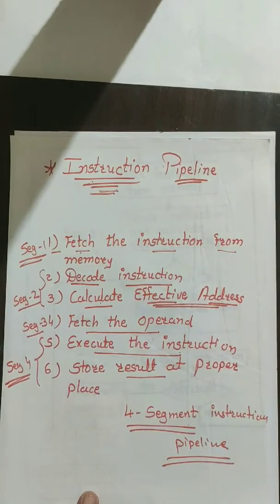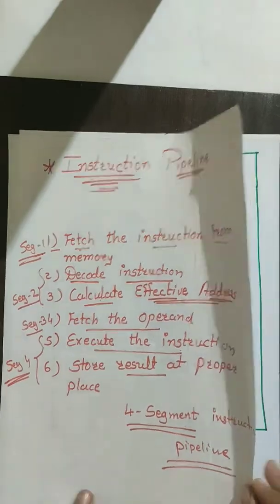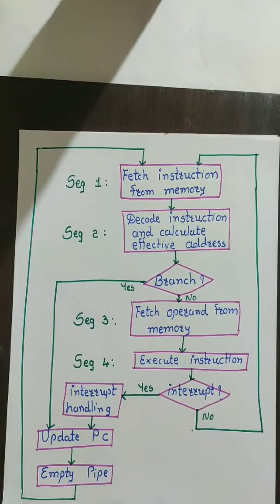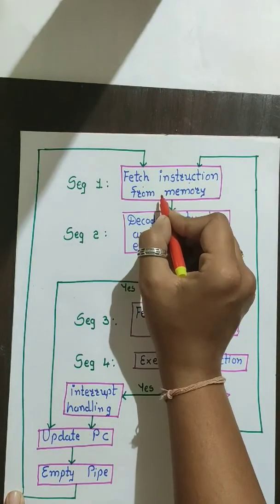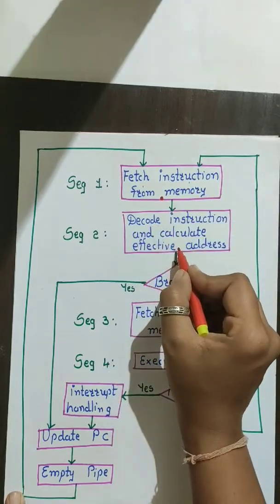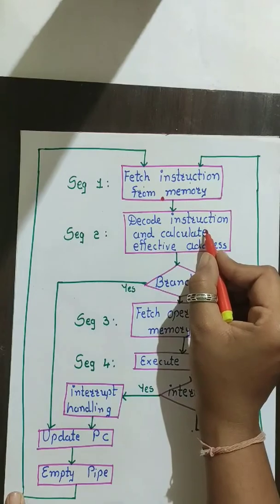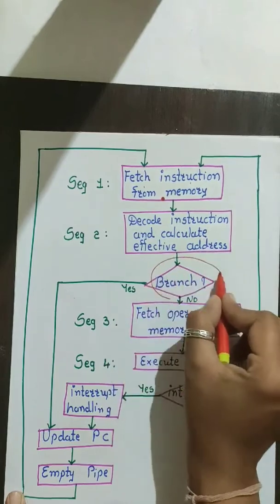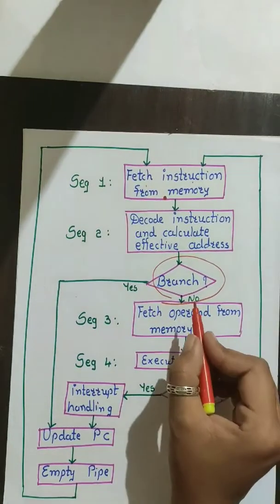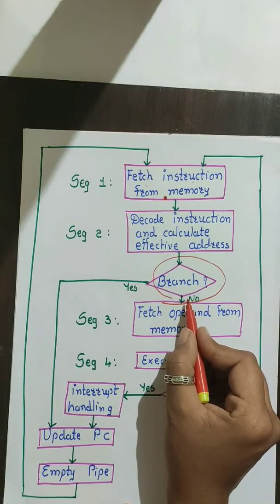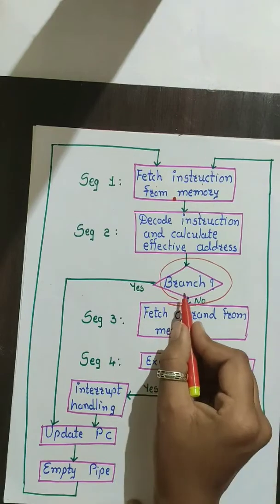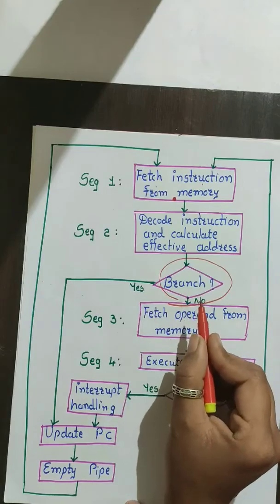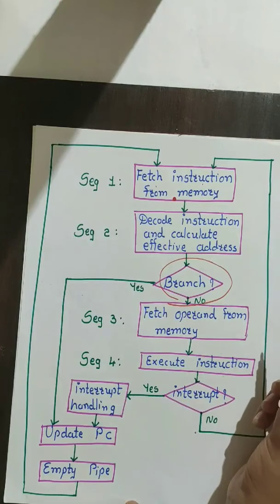Now let's see how it will work using a flowchart for four-segment CPU pipelining. Segment one fetches the instruction from memory. Segment two decodes the instruction and calculates the effective address. Here there is a twist: we need to check whether it is a branch instruction or not. If it is not a branch instruction, we fetch the operand and execute the instruction. But if it is a branch instruction, we jump to a particular location, and execution will proceed from that location.